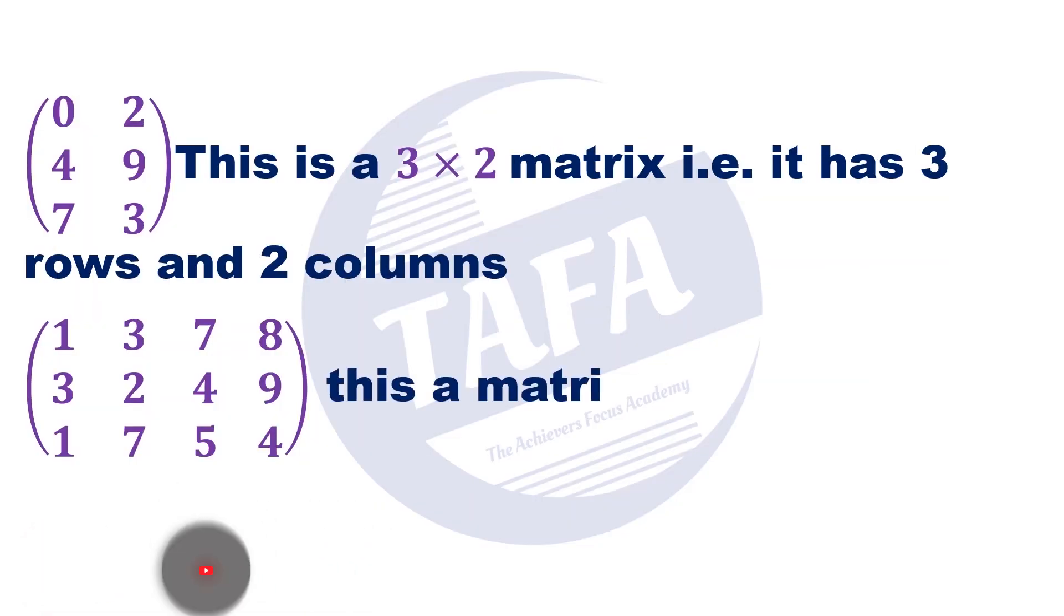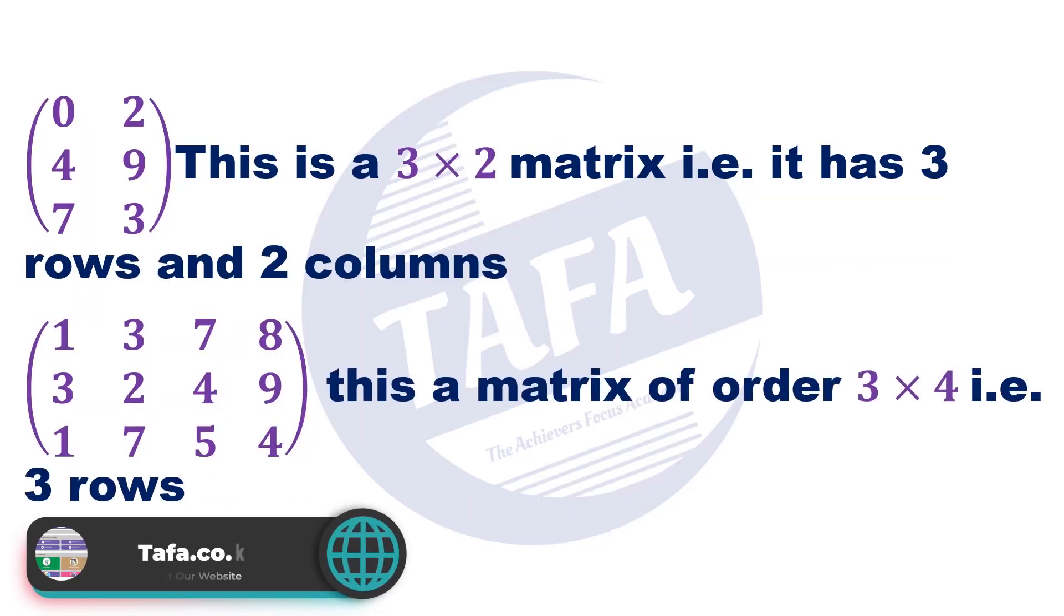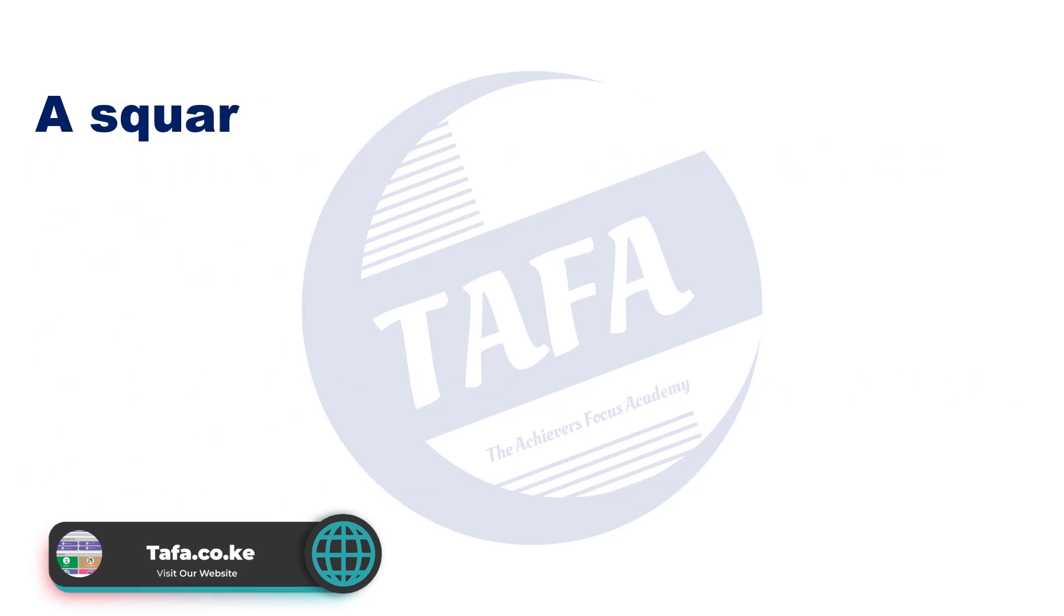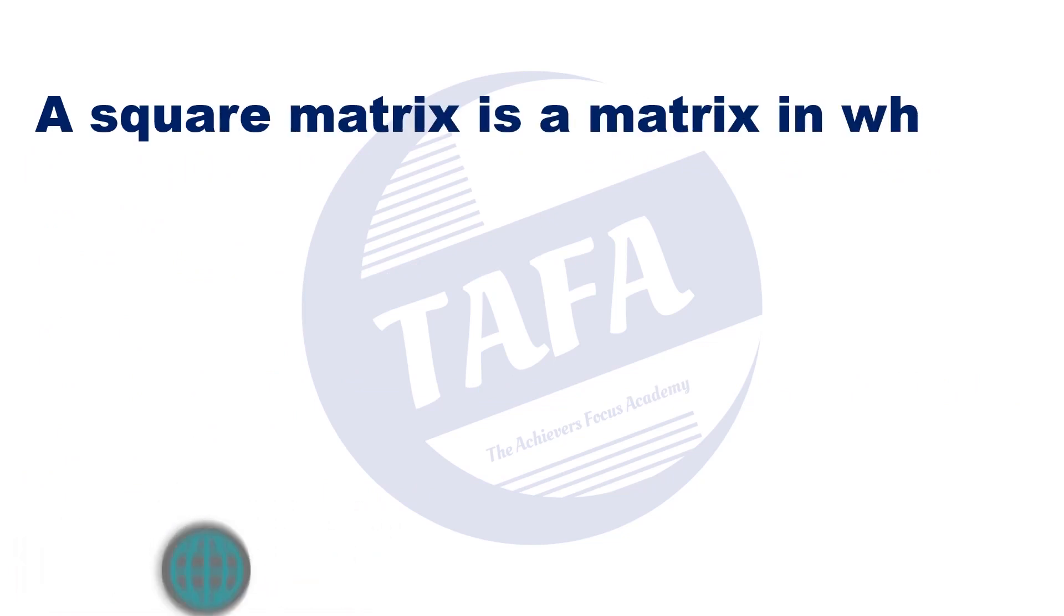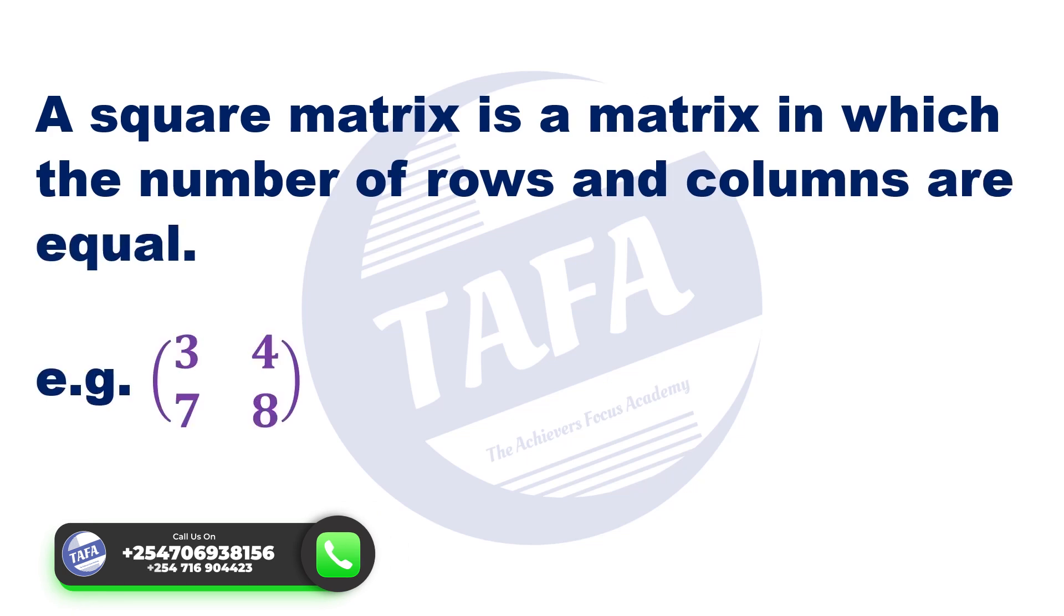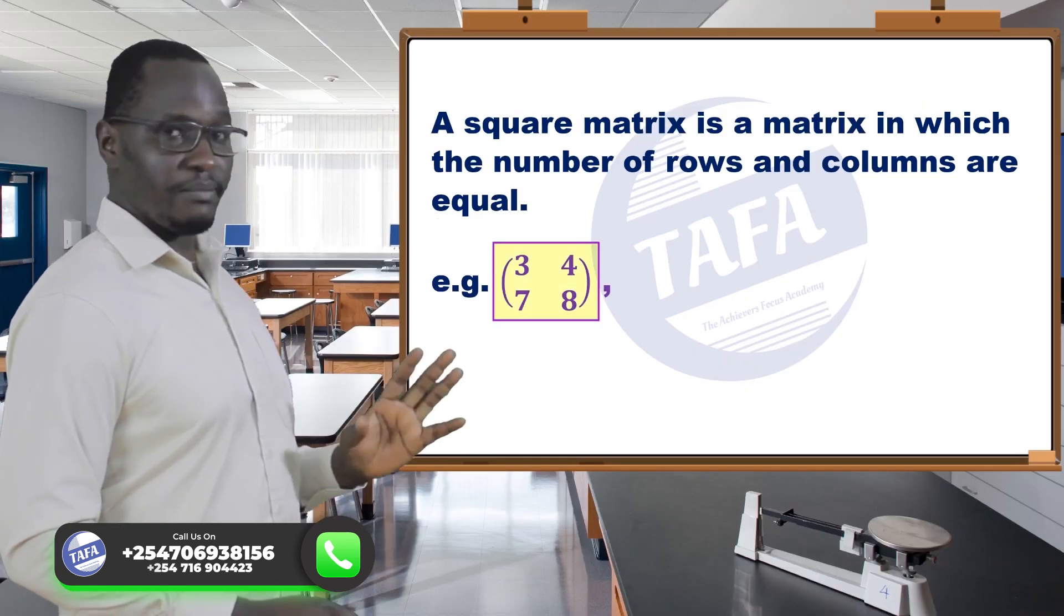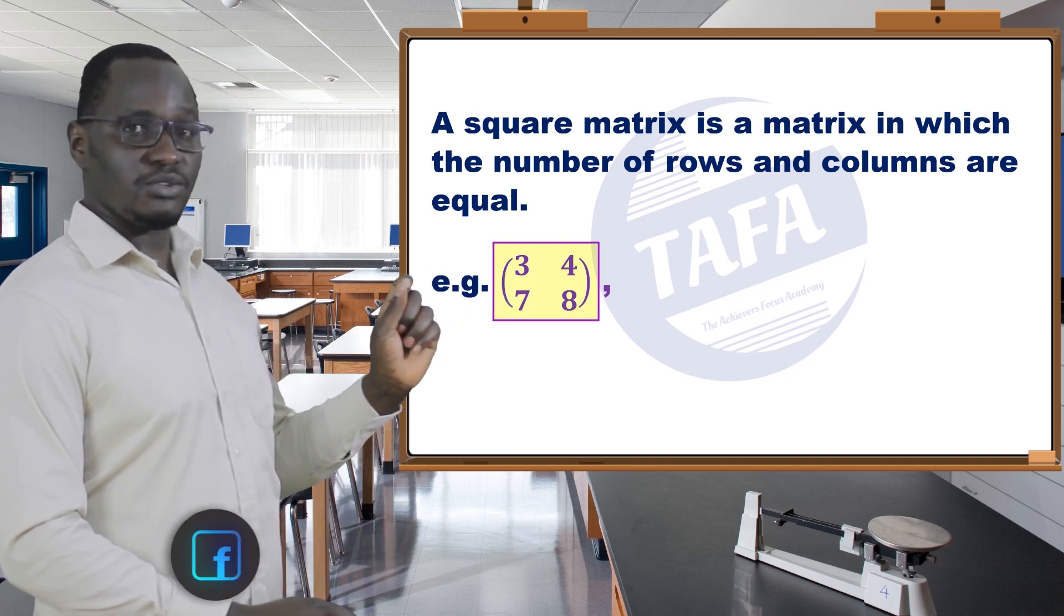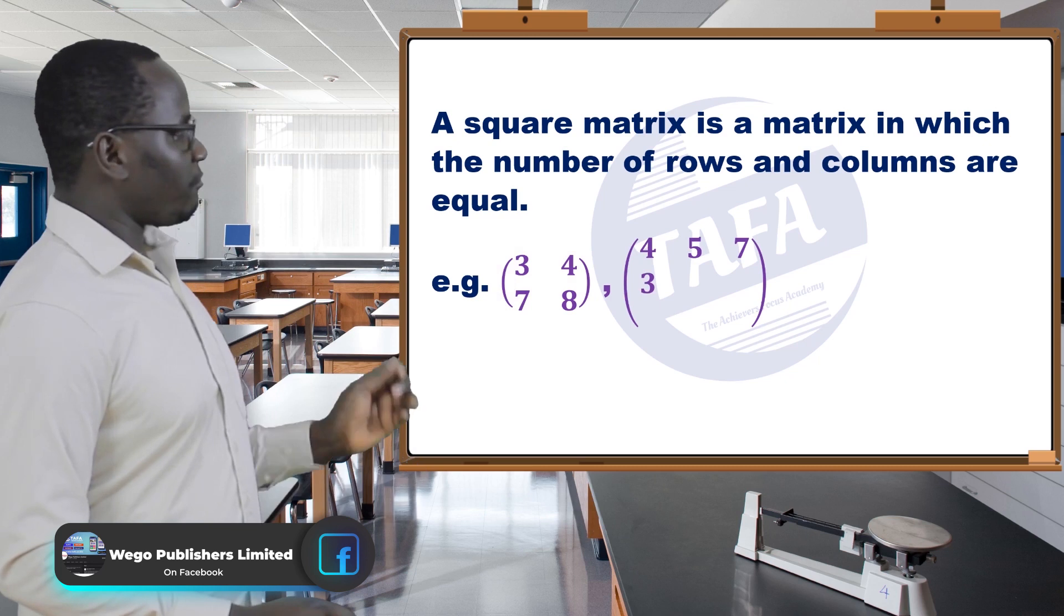This is a 3 by 4 matrix, meaning it has 3 rows and 4 columns. A square matrix is a matrix in which the number of rows and columns are equal. For example, 3, 4, 7, 8 - this is a square matrix because the number of rows is 2 and the number of columns is also 2. Then we have 4, 5, 7, 3, 2, 1, 0, 1, 4.